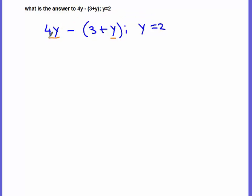So instead of 4y, you're going to write it as 4 times 2, because y is 2.